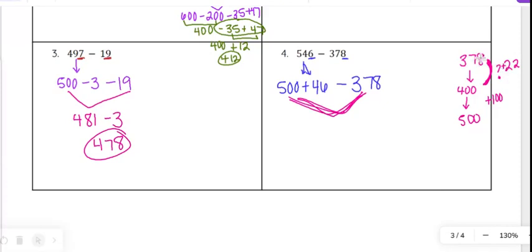Adding 22 to 378 would get me to 400, and then another 100. So 500 minus 378 is 122. And then I still have this plus 46.